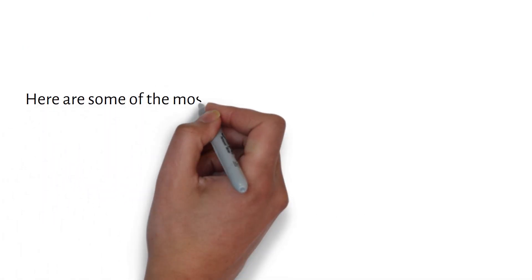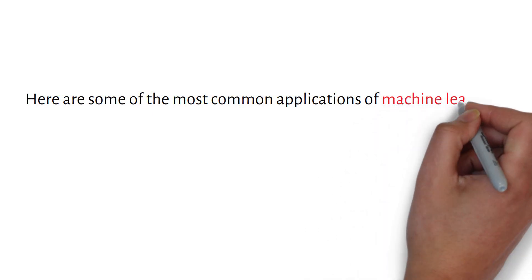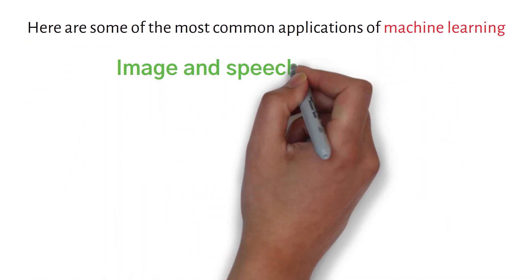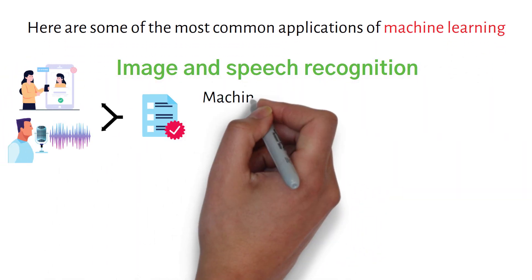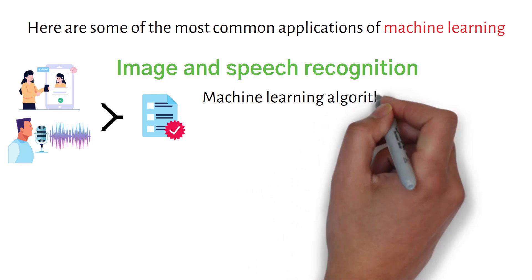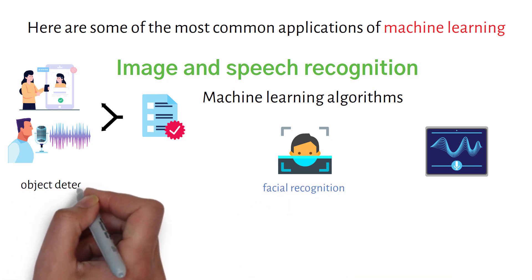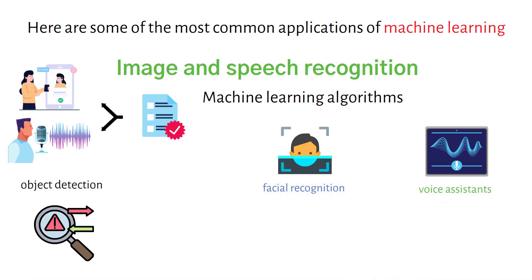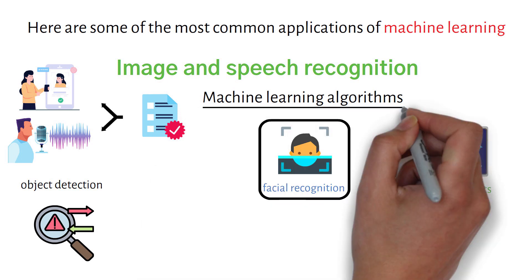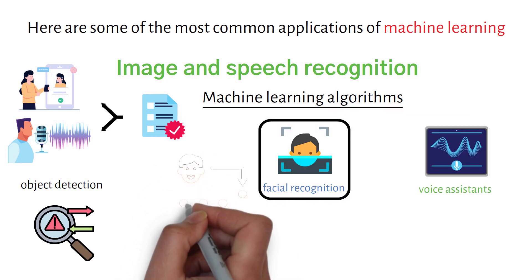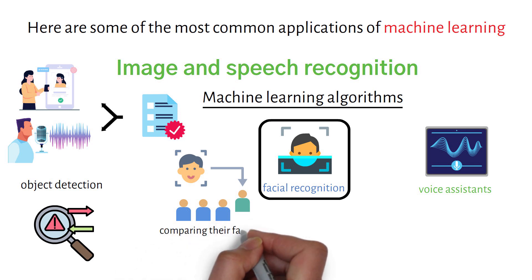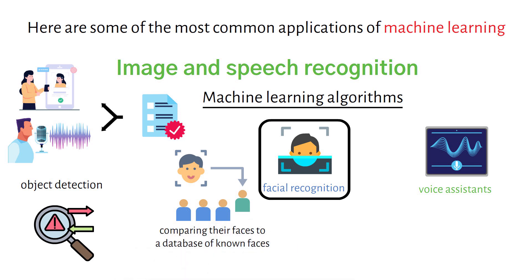Here are some of the most common applications of machine learning. Image and speech recognition: machine learning algorithms can be trained to recognize images or speech patterns, used for tasks such as facial recognition, object detection, and voice assistance. For facial recognition, machine learning algorithms can identify individuals by comparing their faces to a database of known faces.